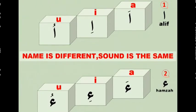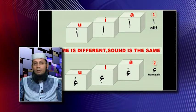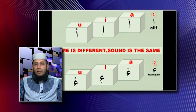The second letter is called Hamza. This gives the same sound as Alif when we place a vowel on top of it. Understand: the first one is called Alif, the second one is called Hamza. The moment you put a vowel above or below the first or second letter, it conveys the same sound — A, E, U. So the name is different, Alif and Hamza, but the sound both of them convey is the same.